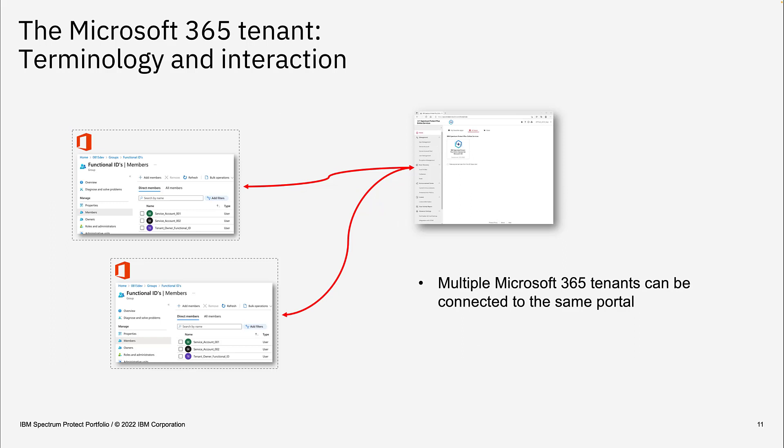There could be a situation where the customer has multiple tenants. These multiple tenants can all be connected to the same SPP Online Services portal, meaning they could have one global backup admin managing all Microsoft tenants inside the company. There is also an option to generate administrators with access only to a single tenant for more fine-grained access to recovery, described on a later slide.